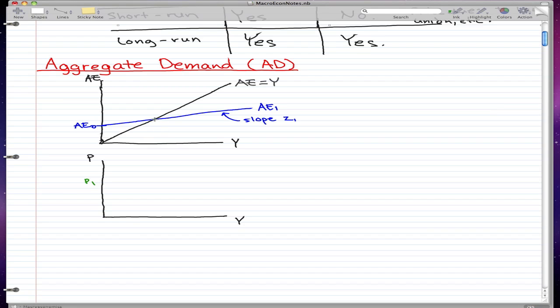In this video I'm going to be going through aggregate demand. As you can see here, I have a graph where the black line is the equilibrium spending and this blue line is the aggregate expenditure. This is our first aggregate expenditure line.